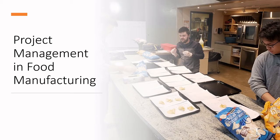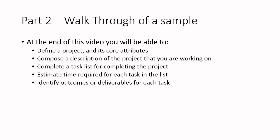All right, everyone, we are back for part two of project management in food manufacturing. This is aligned with our course in product and process engineering in the third year of the Culinary Innovation Program. In the first part of this video series, we talked about a big overview of project management and its role in food science and food technology applications. Right now we're going to do part two and walk through a sample of a project plan, looking at the initiation phase of project management.